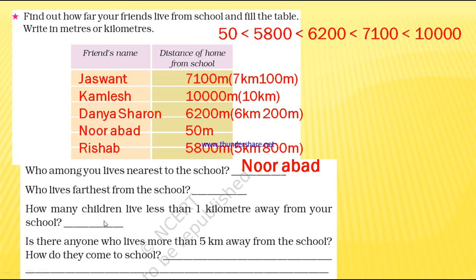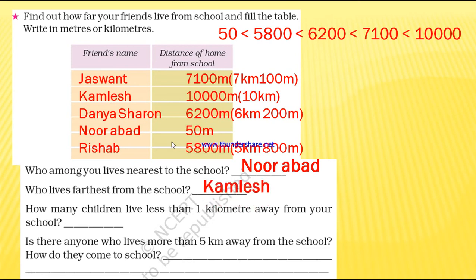Who is living very farthest from the school — so far from the school? Which one is the greatest value? 10,000. Who has 10,000 meters? Kamlesh. So who lives farthest from the school? Kamlesh.